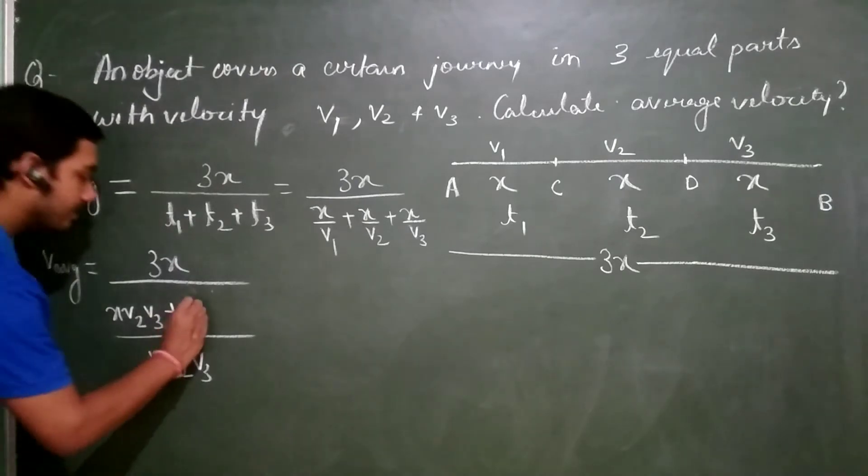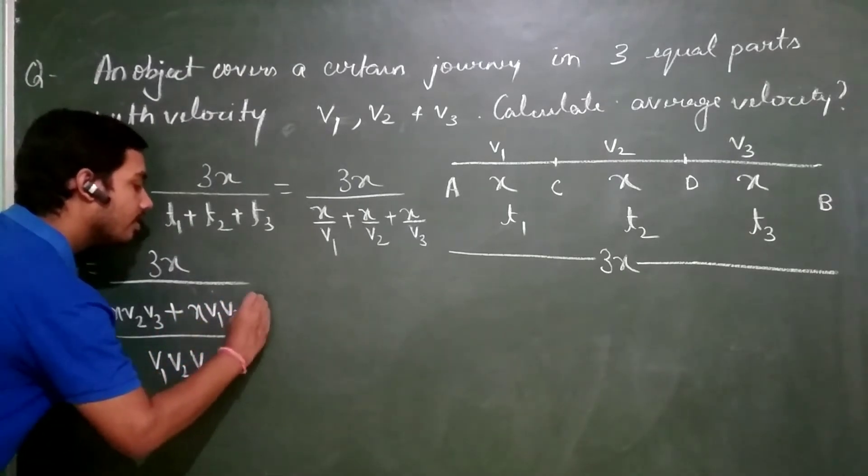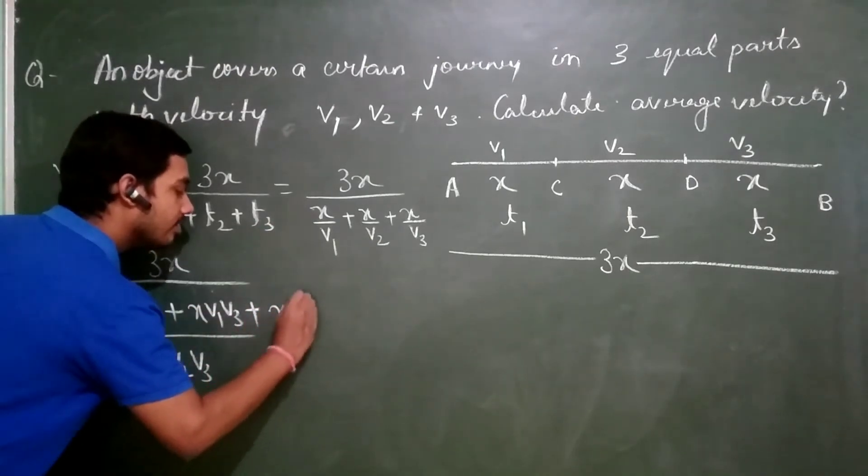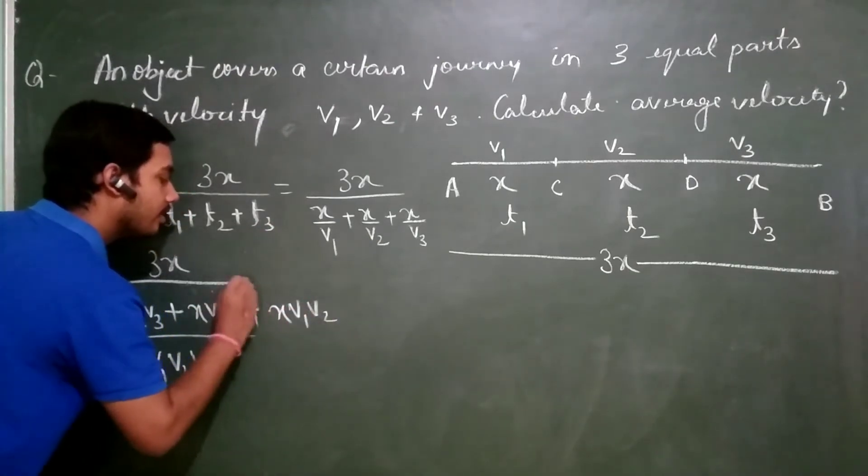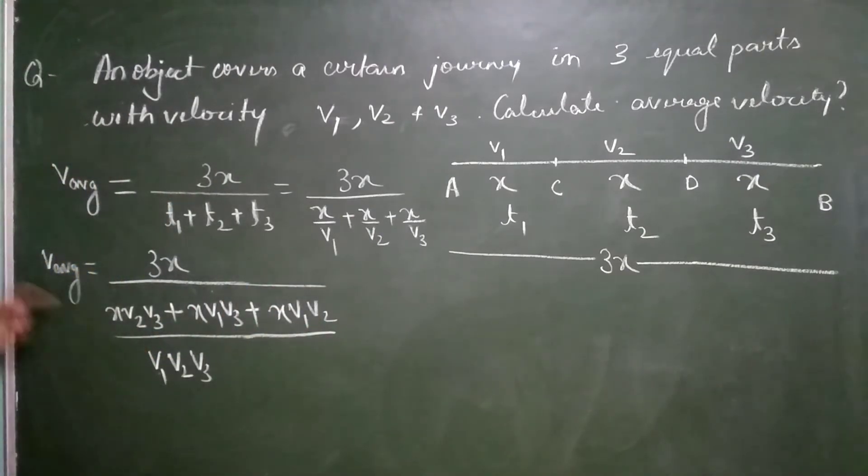V2 and V2 will get canceled. X, V1, V3. V3 and V3 will get canceled. X, V1, V2. I hope it is clear to you. Again, what is the common term in all of them? X.